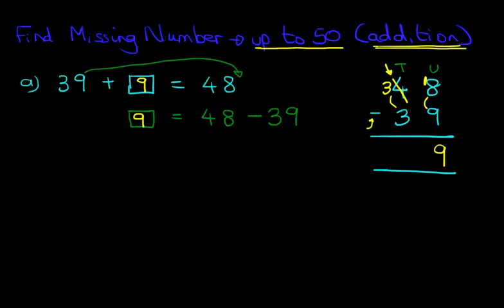Let's have a look at our second example. This time we have something plus 27 equals 39. So basically, what number do we have to add to 27 to make it equal to 39?